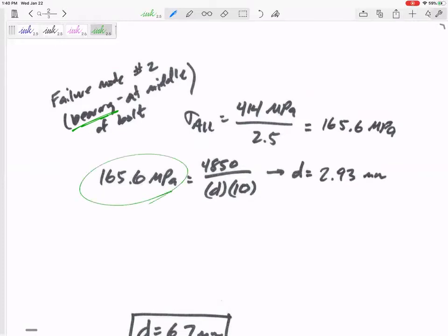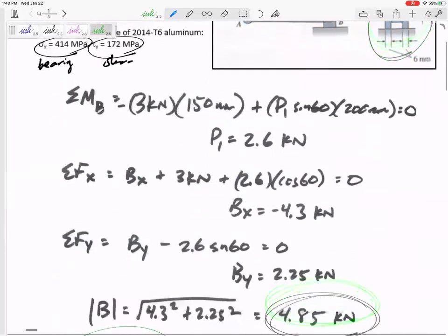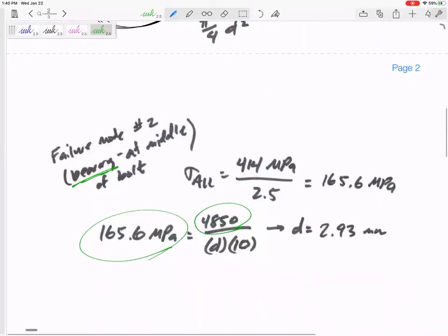I know I'm going to allow it to get up to 165.6 MPa, because I was given the material's failure is really 414 and I need to use the factor of safety of 2.5, so I'm only allowed to get up to 165.6. I know the force is 4850 newtons. For bearing at the middle, whether it's in single or double shear, you don't divide it by two. It takes the full 4.85 kilonewtons.